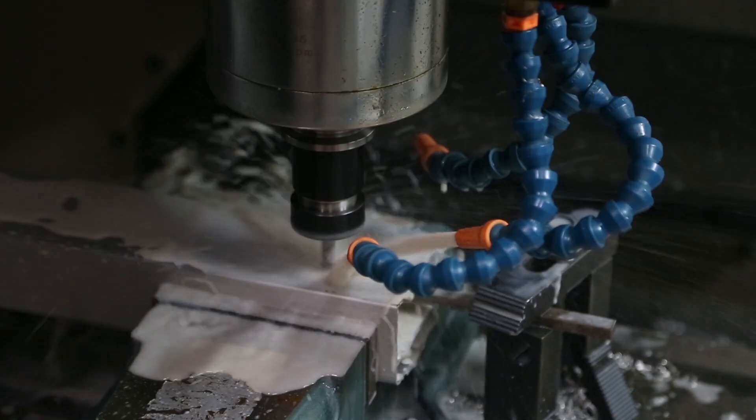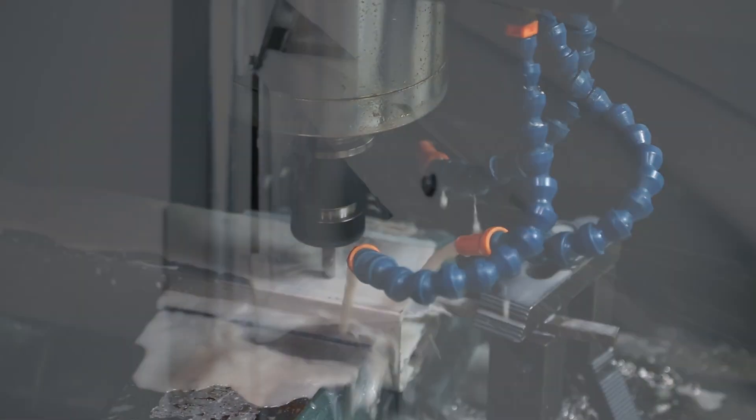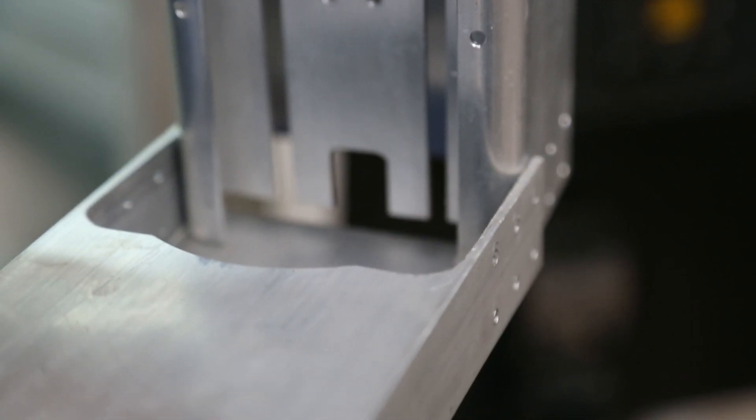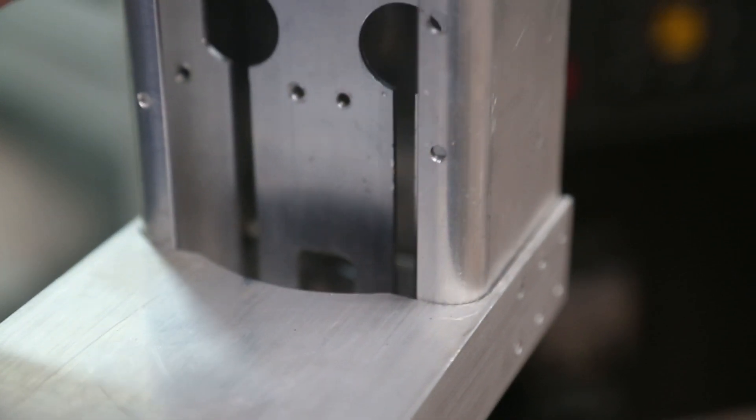The customized mold and CNC milling process used to produce the aluminum unibody tower ensures our technical specifications are met exactly every time.